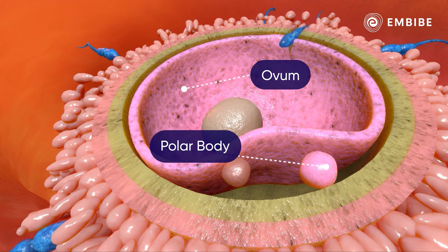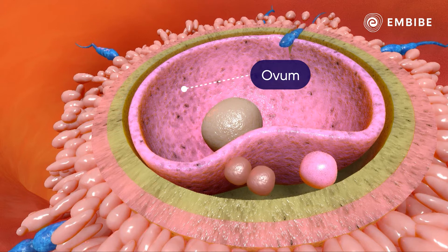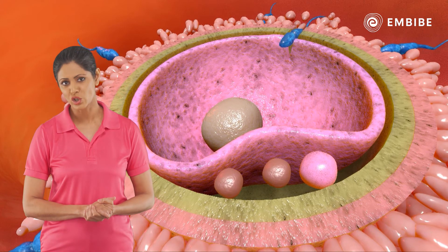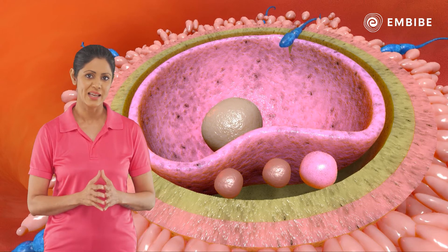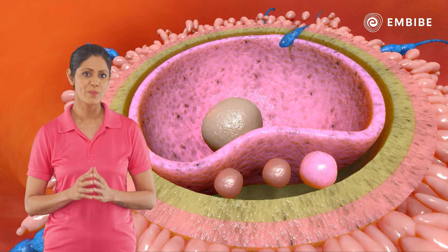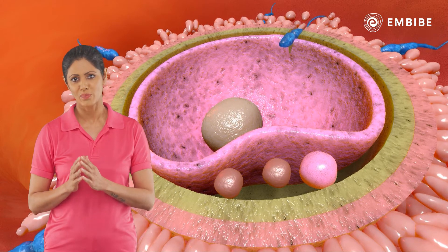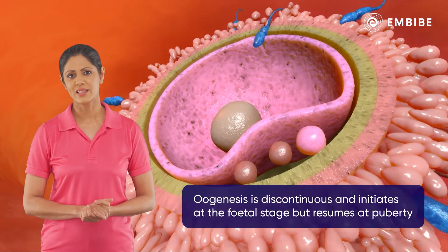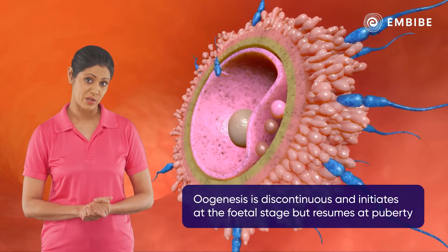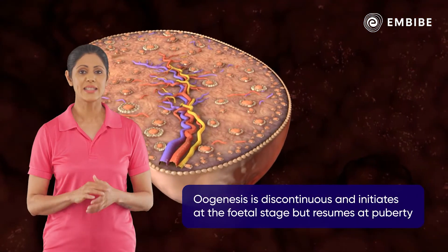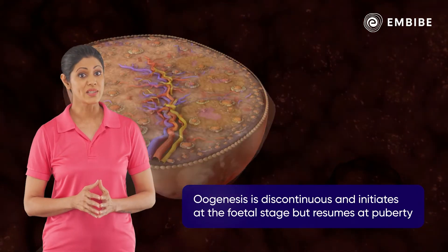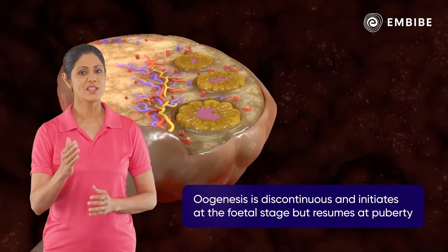The first polar body divides into two more polar bodies. This results in the formation of one gamete cell called ovum and three polar bodies. Oogenesis is a discontinuous process wherein it initiates at the fetal stage, which resumes again at puberty.